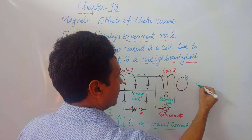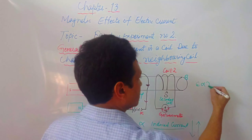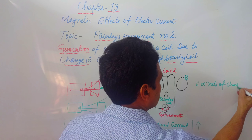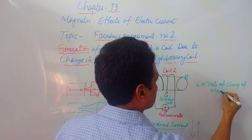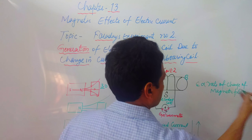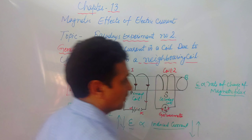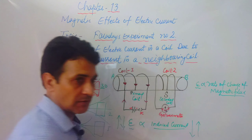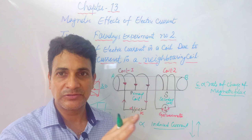The key law: induced EMF is directly proportional to the rate of change of magnetic flux. Whenever there is a change in magnetic flux, an induced EMF will be set up, and that induced EMF will cause current to increase or decrease.